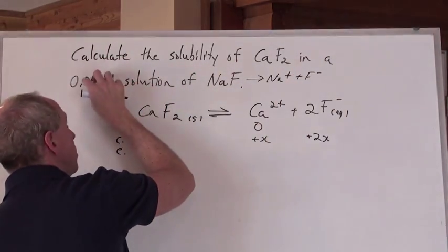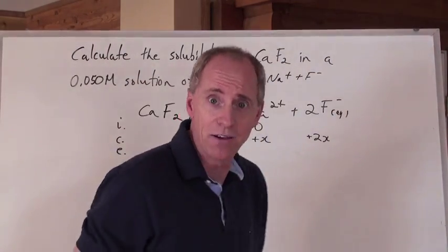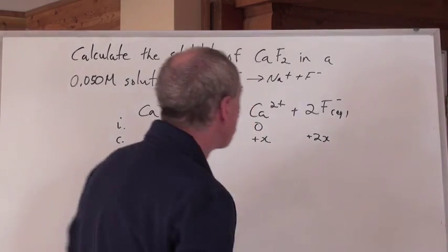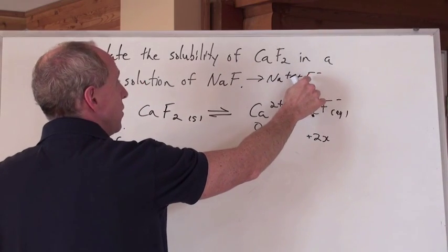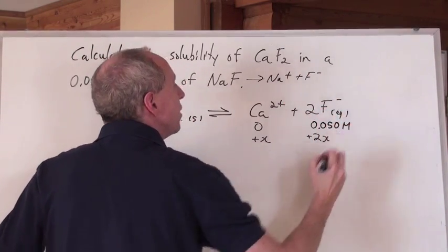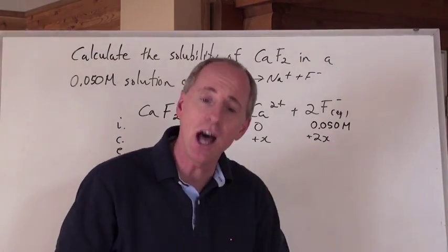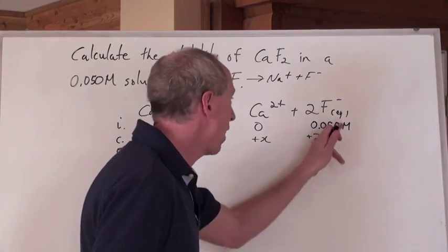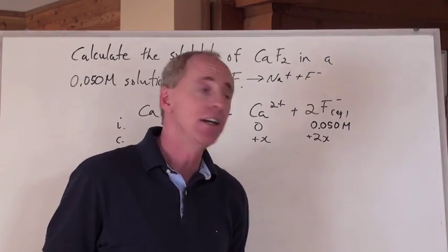By the way, if there was a 2 in front here, the concentration of that would be doubled, that F negative ion. Just be aware of that kind of thing. But right now, there is a concentration of this in solution initially. It's 0.050 moles per liter. Do you see that on the initial line, there actually is a chemical present? And so, that's called the common ion effect.